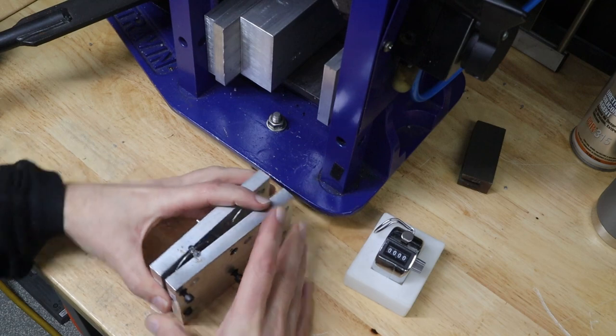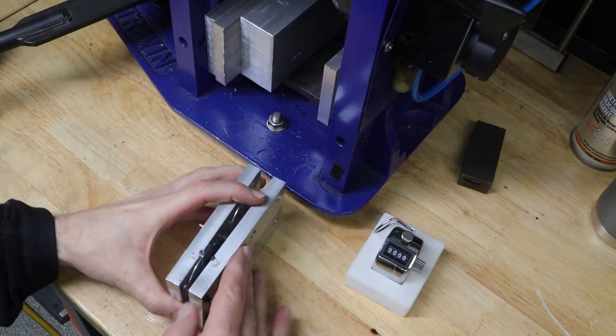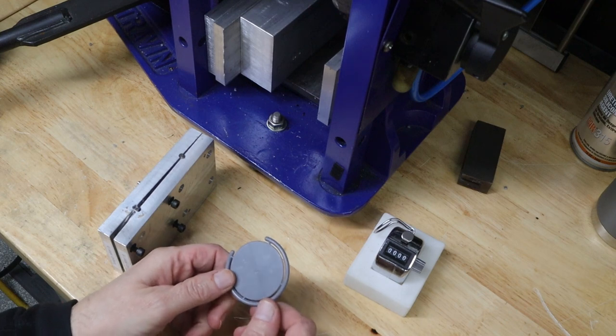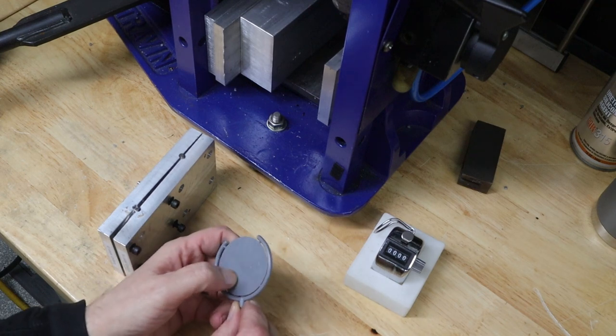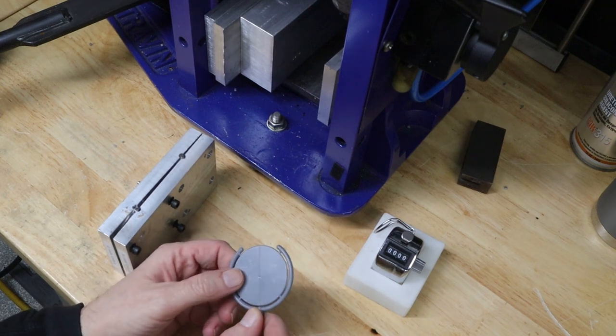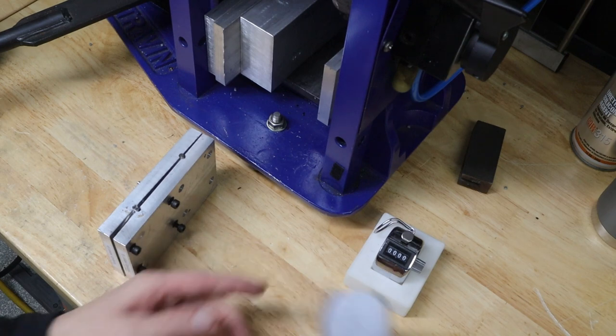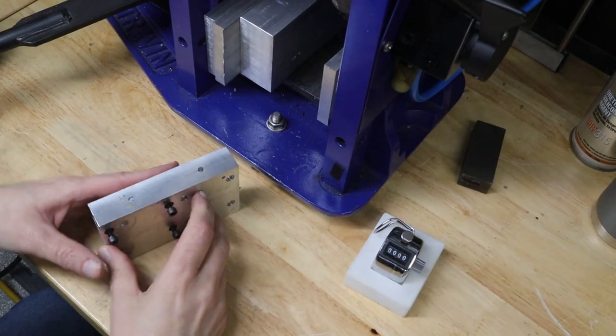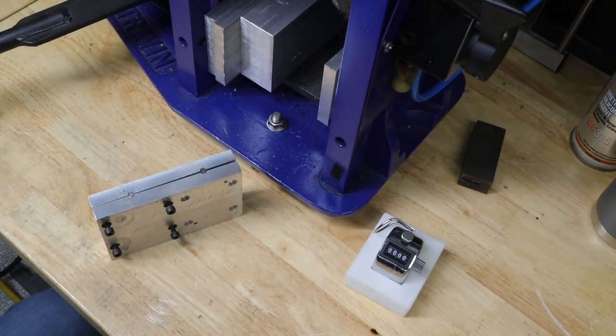I didn't back the screws out all the way, which I probably should have, it would have made it easier to get the part out. Now inspecting the part, I noticed just a tiny bit of a witness mark on the front as a result of it not having a complete fill. So I increased the pressure a little bit, and then it's back to putting the screws in and trying it again.